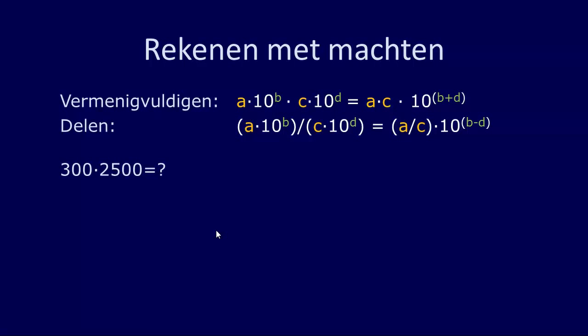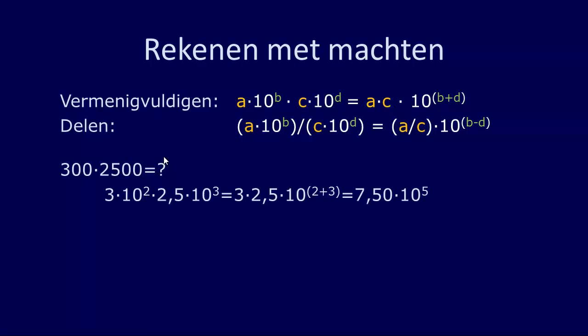Voorbeeldje 1: 300 maal 2500. Lukt me dat uit mijn hoofd? Zet ze eerst eens even om in de wetenschappelijke notatie. Dan wordt 300 gelijk aan 3 maal 10 tot de macht 2, en 2500 wordt 2,5 maal 10 tot de macht 3. Dan zegt de rekenregel: schuif de twee getallen naar voren, 3 maal 2,5, en de twee machten tel je bij elkaar op, 10 tot de macht 2 plus 3. 3 maal 2,5 lukt ons uit ons hoofd: dat is 7,5. Het antwoord wordt dan 7,5 maal 10 tot de macht 5.